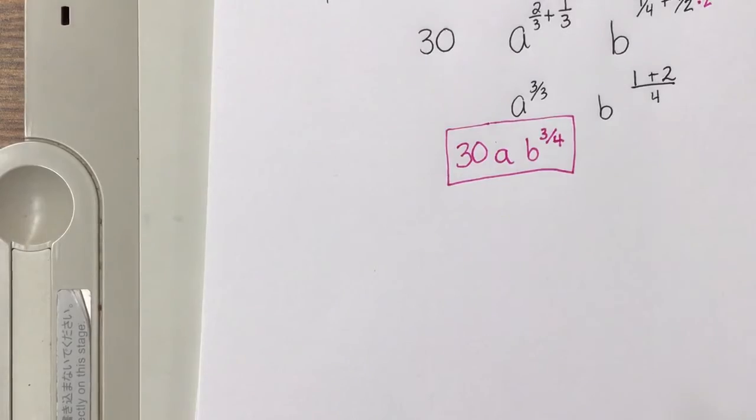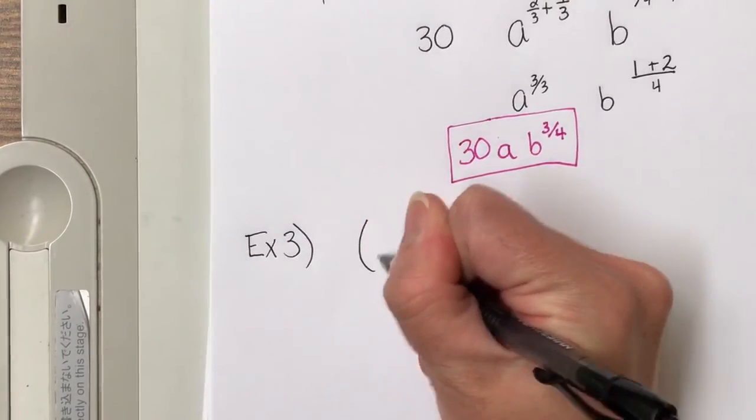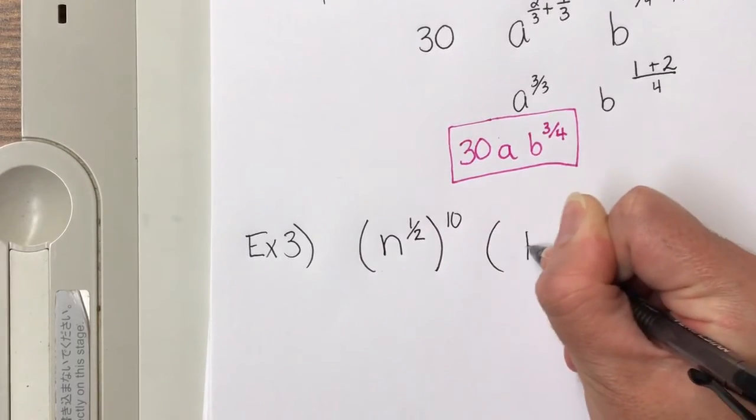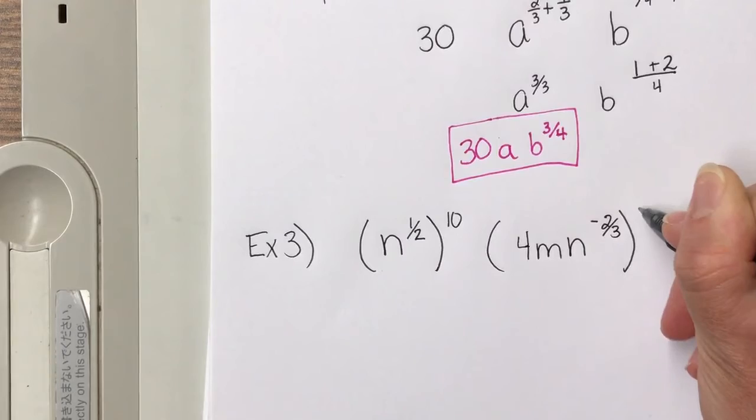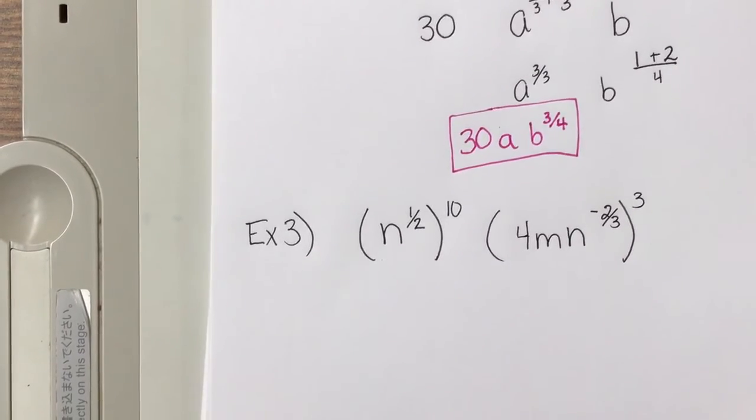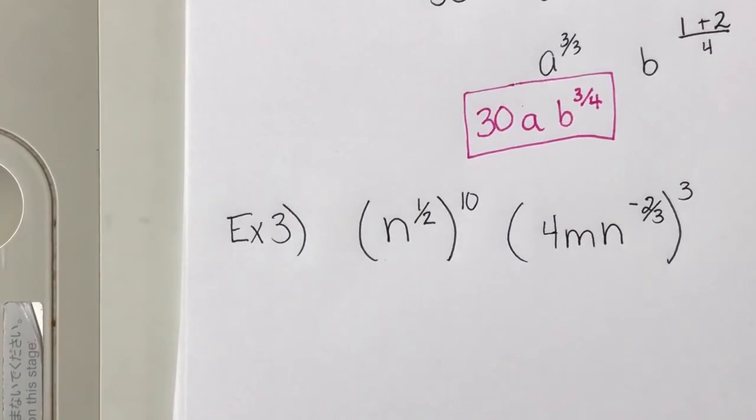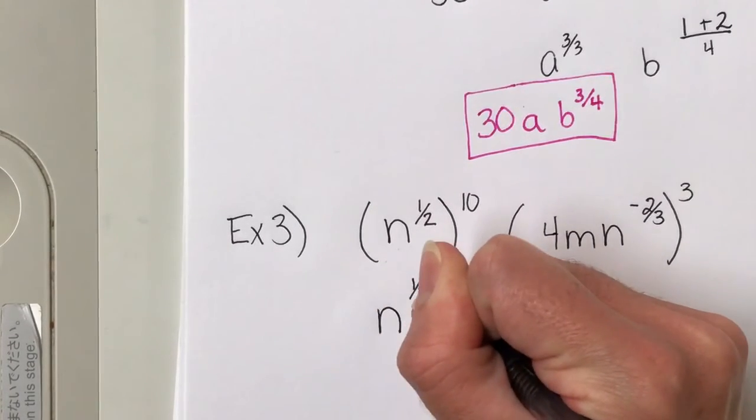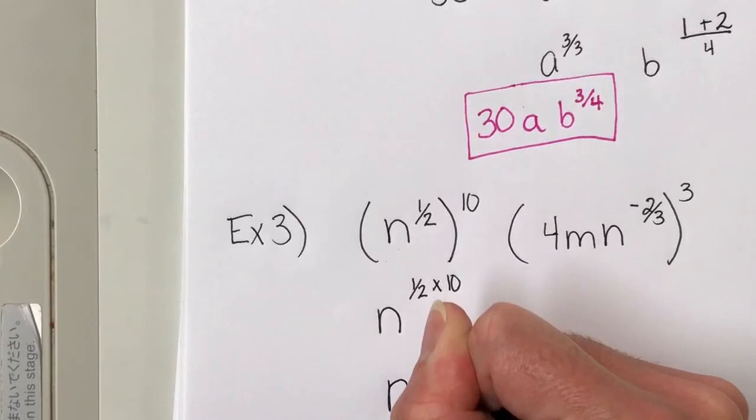So one more example. And then you all are going to try some on your own. So example three. Again, fractional exponents. So n to the one-half to the 10. And then 4m times n to the negative two-thirds, all to the third power. Notice here how I've got powers to a power. So let's start by getting rid of the parentheses. In this one, I have a power to a power, which says to multiply your exponents. So this becomes one-half times 10. Well, half of 10 is 5, so this becomes n to the fifth power.